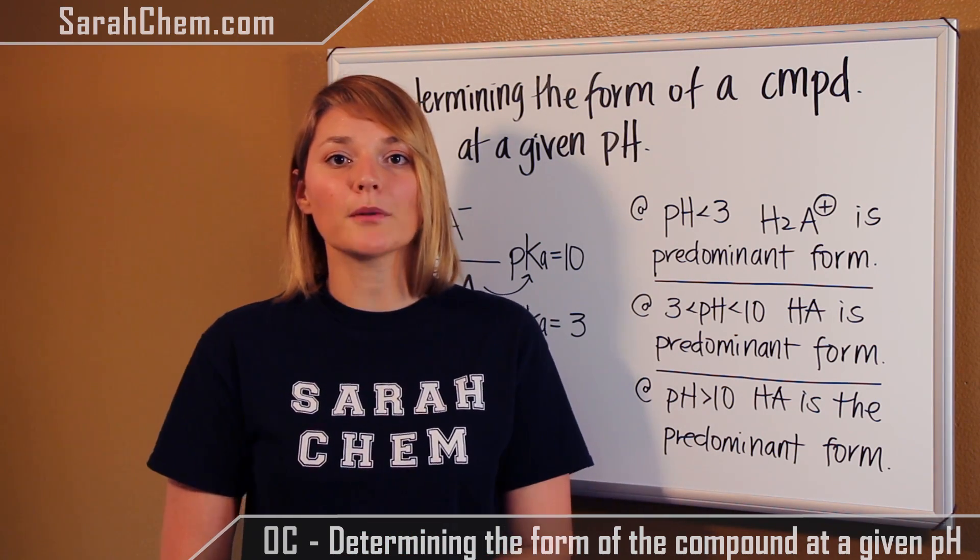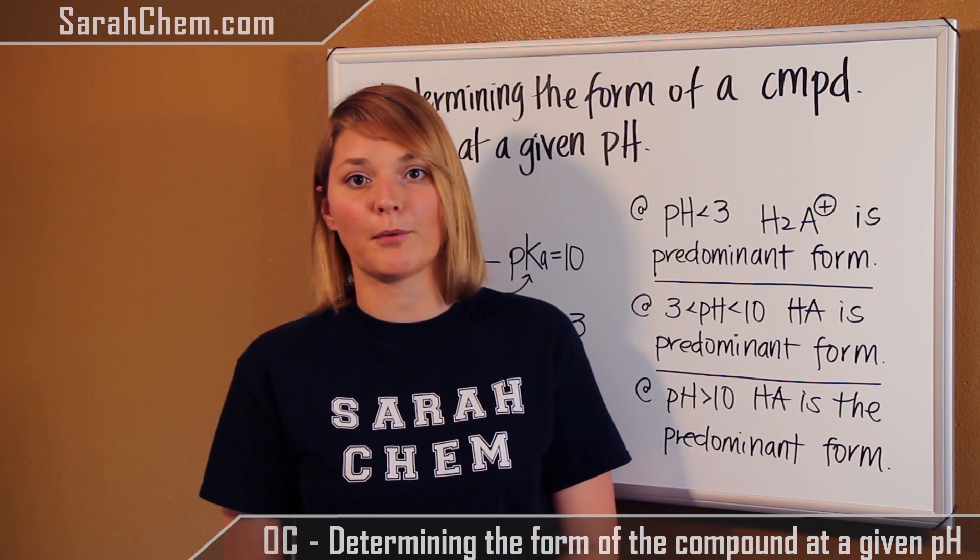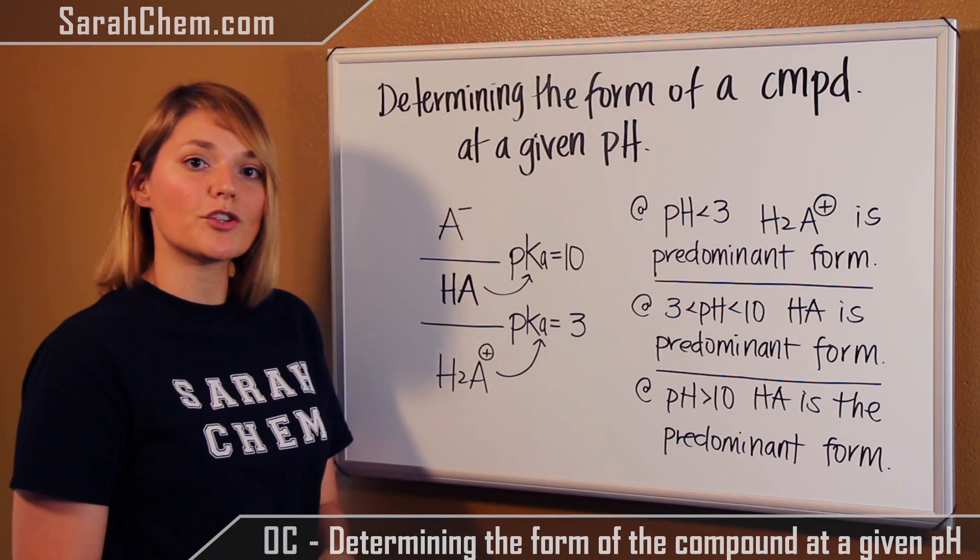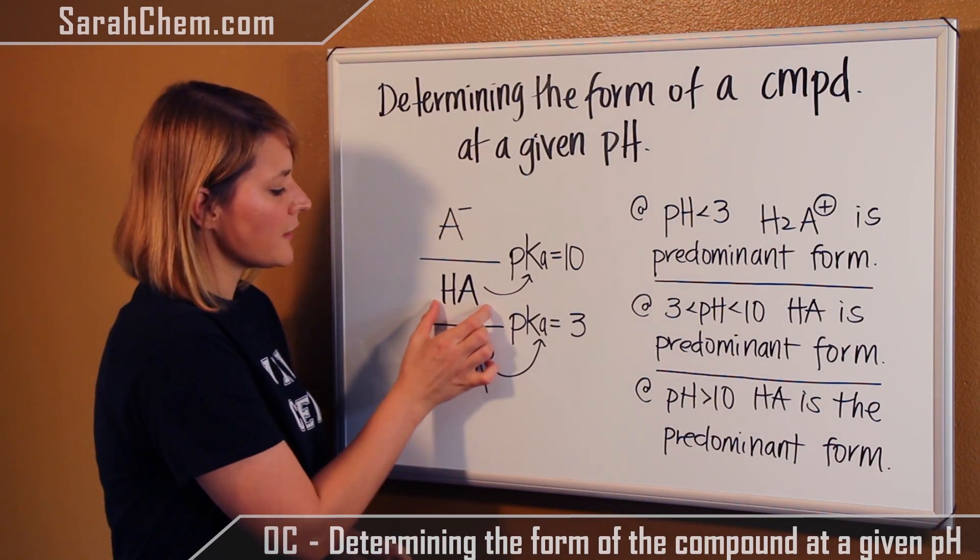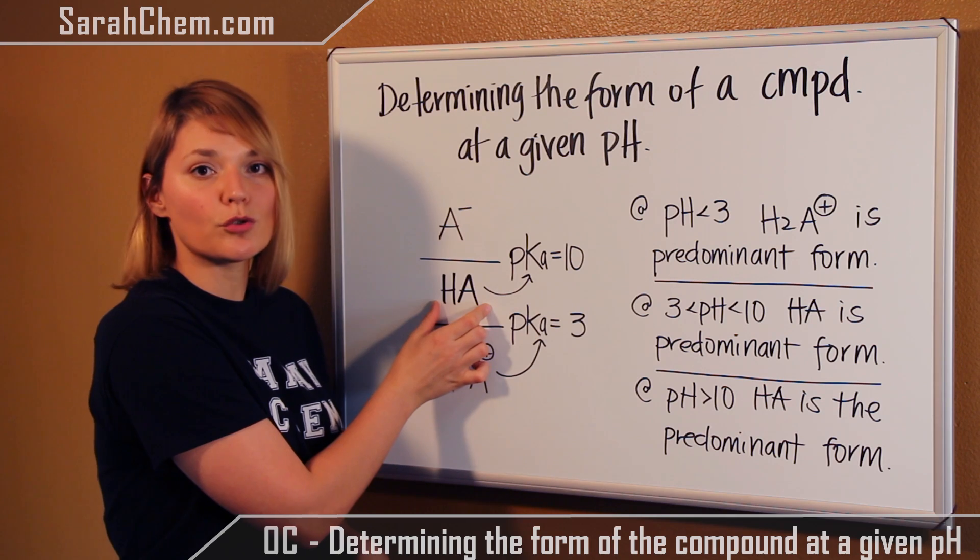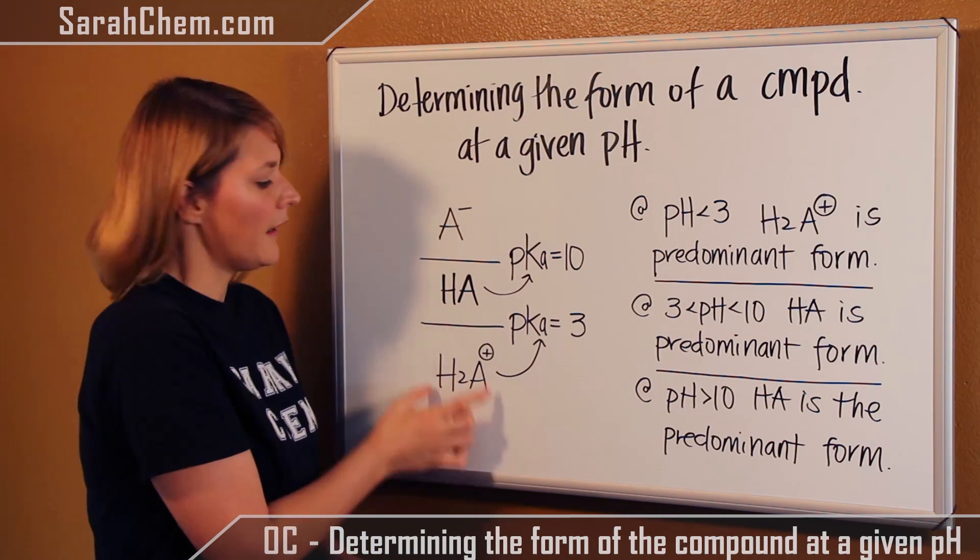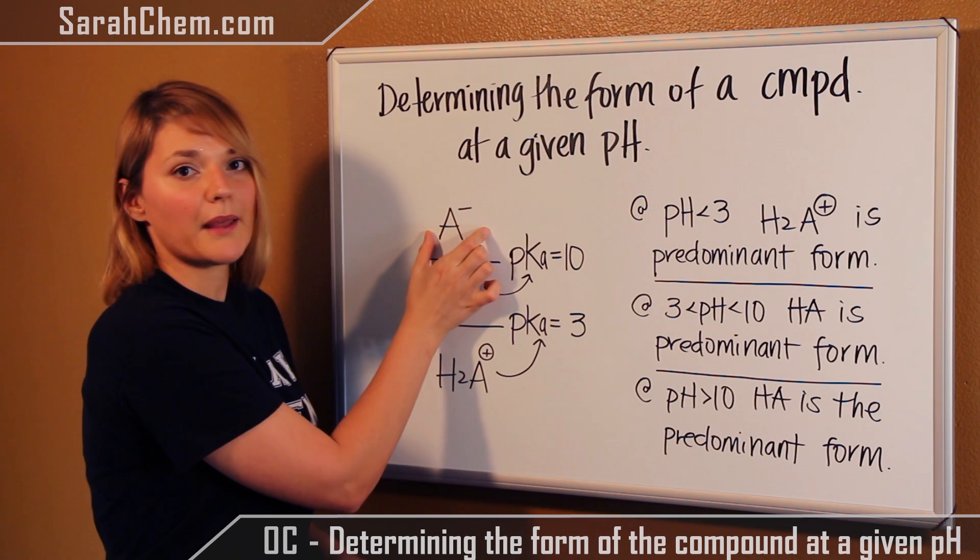When I do these problems, I like to make a pKa table. Your pKa table will look something like that. In order to construct it, what you're going to do is take the reference species, usually it'll be the neutral version, and you're going to write below it its conjugate acid, and above it you'll write its conjugate base.